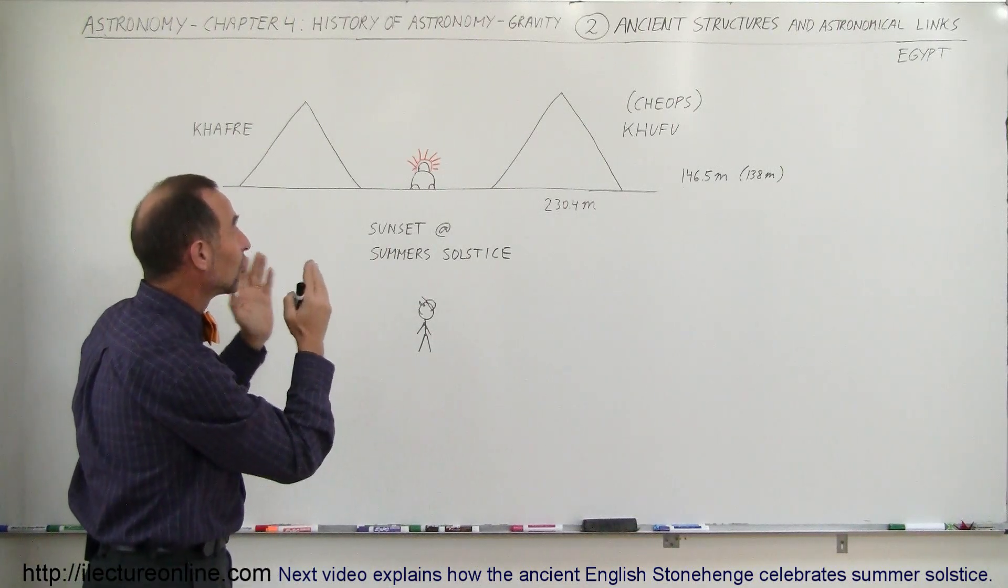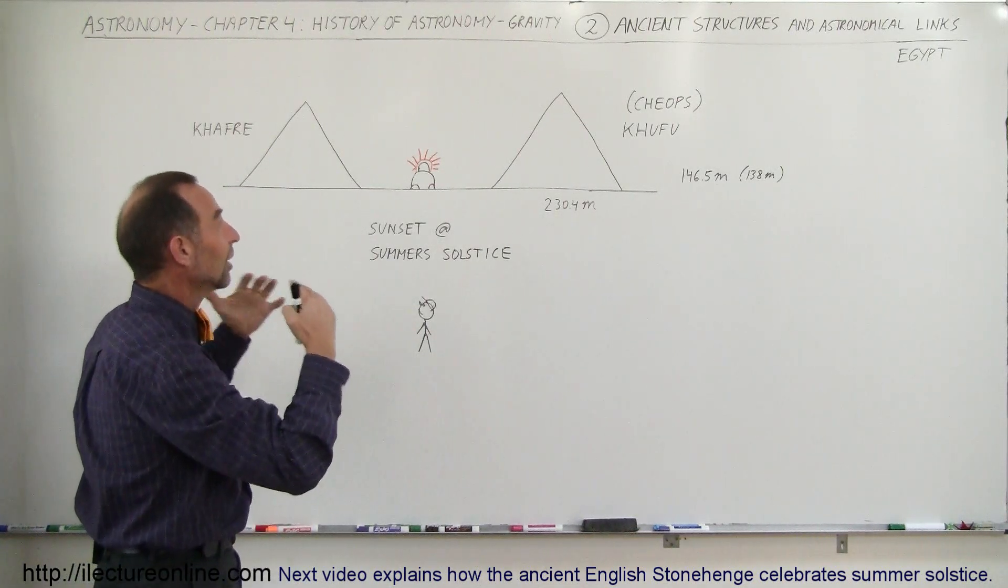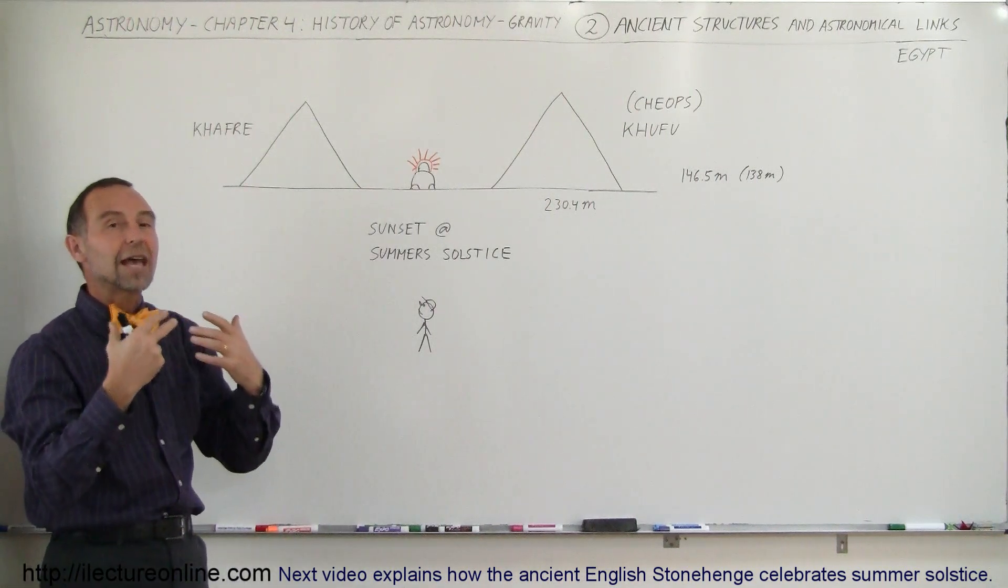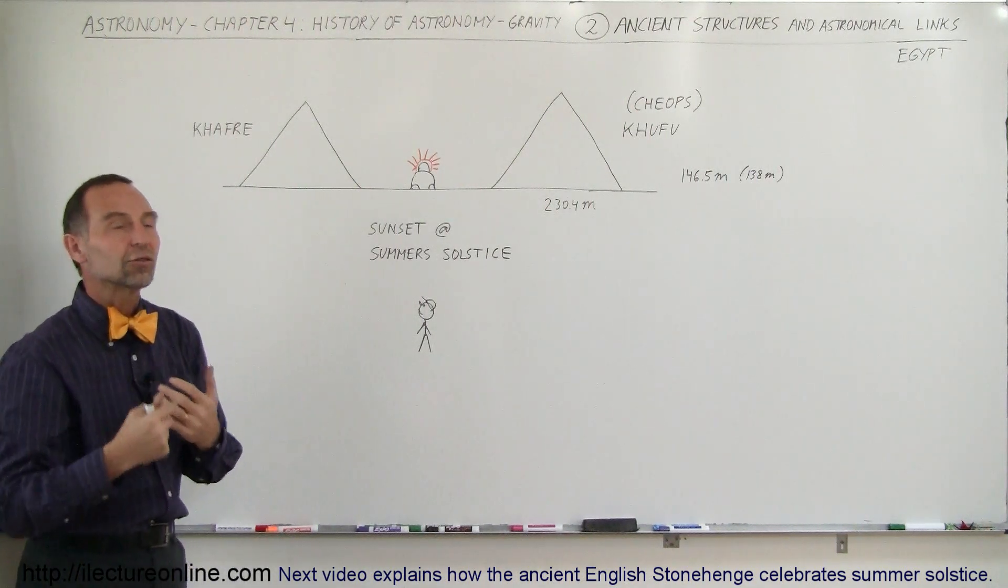So at summer solstice, the sun is directly behind the sphinx, just lighting it up. And it would be one of those events where you say, that's the end of the summer, now the winter is starting.